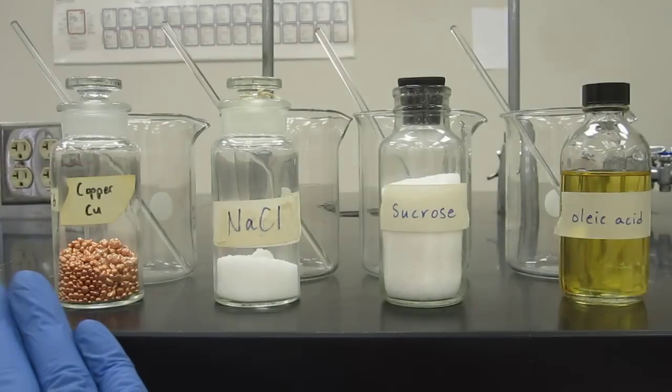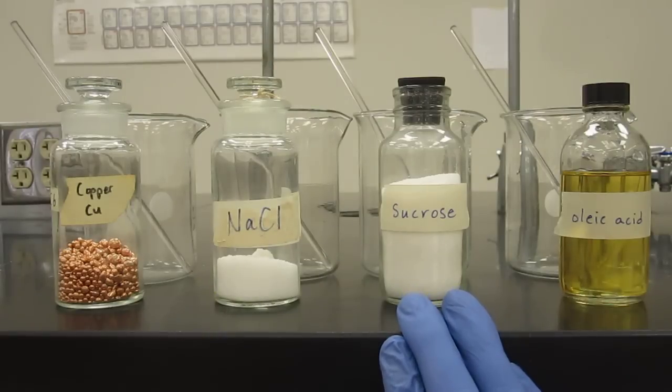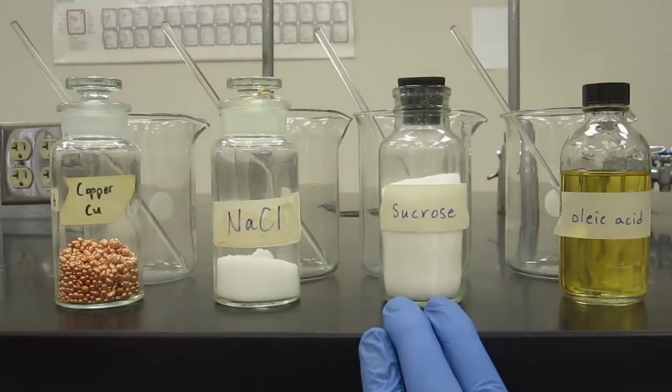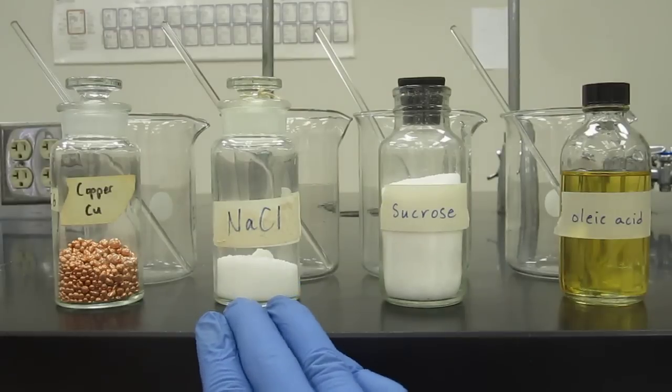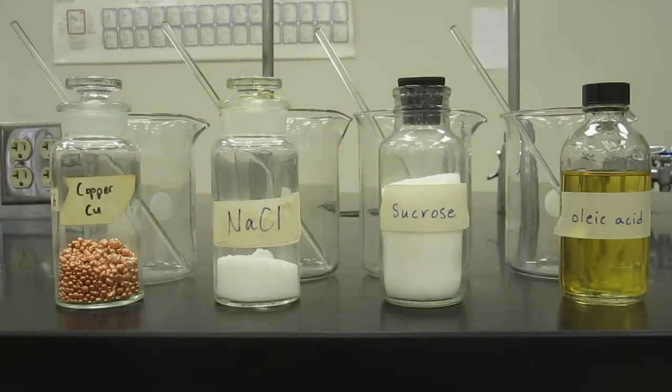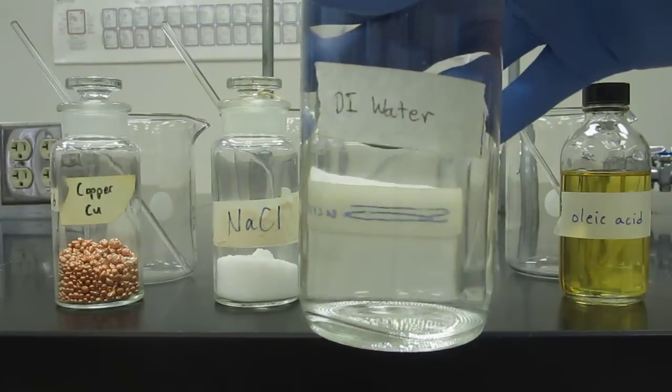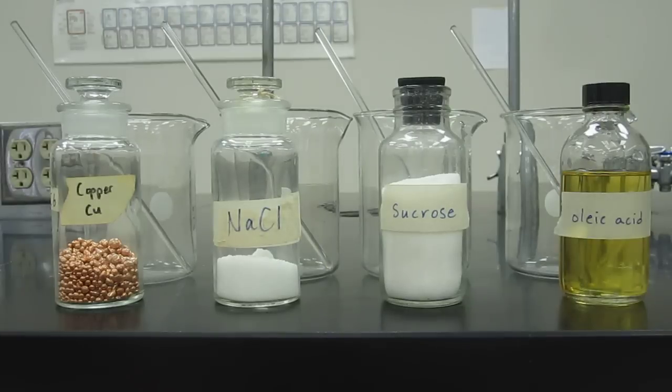So I have pure copper, pure sodium chloride, pure sucrose, which is essentially table sugar. This is essentially table salt. And pure oleic acid, which is the major component of corn oil. We also have deionized water, which is pure water. So those are all pure substances.